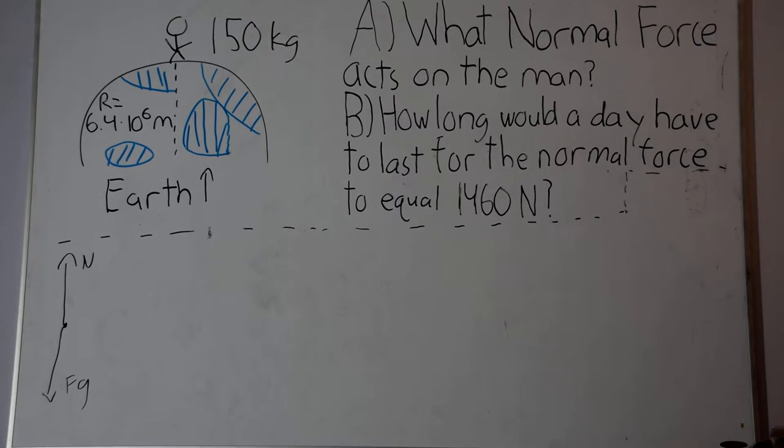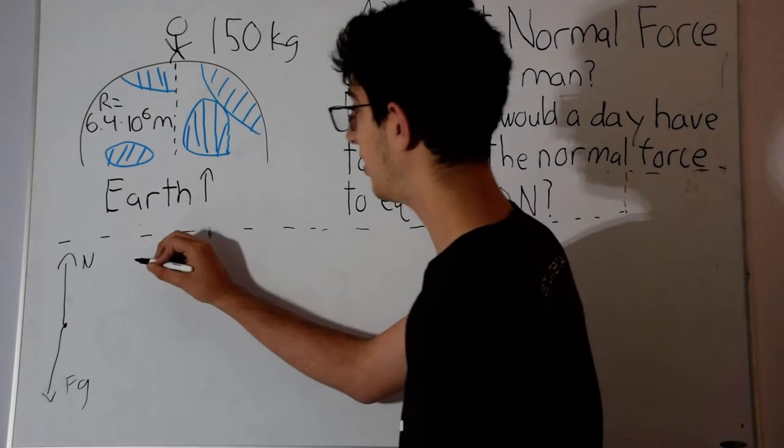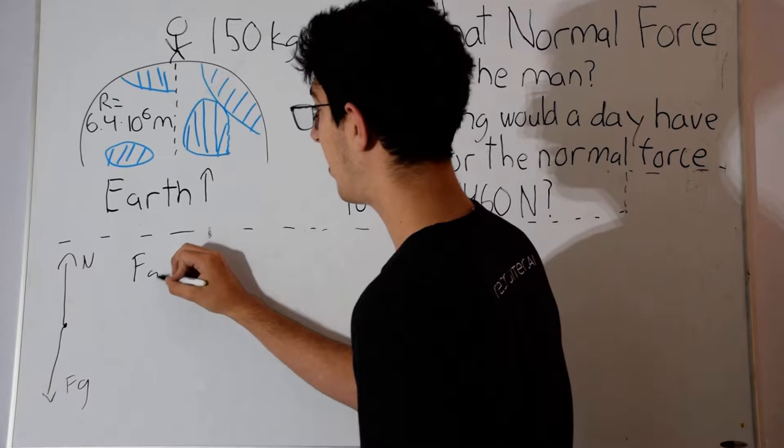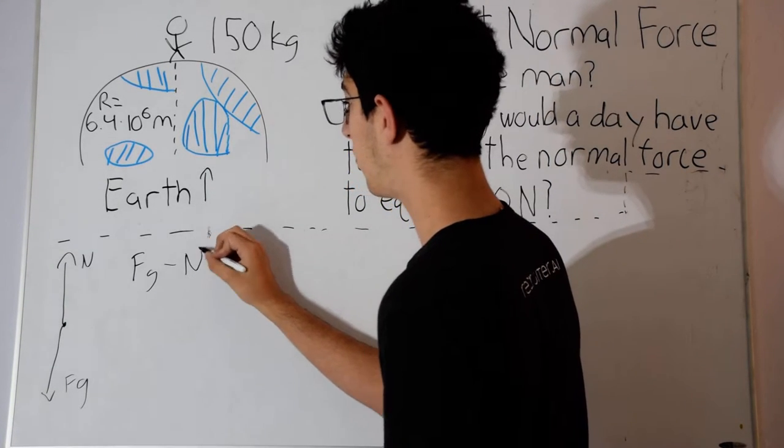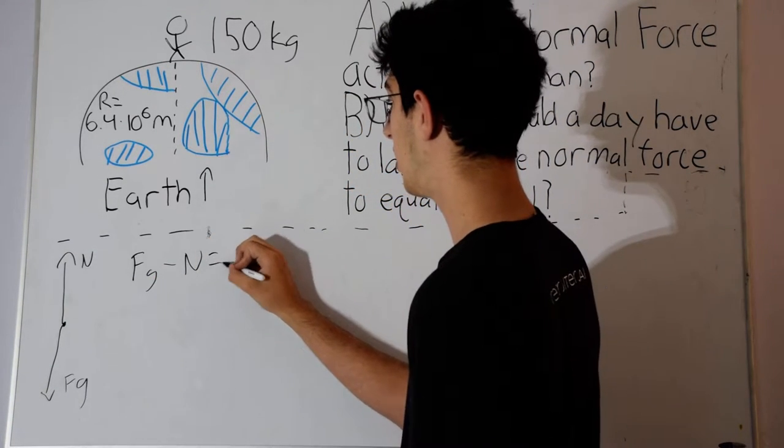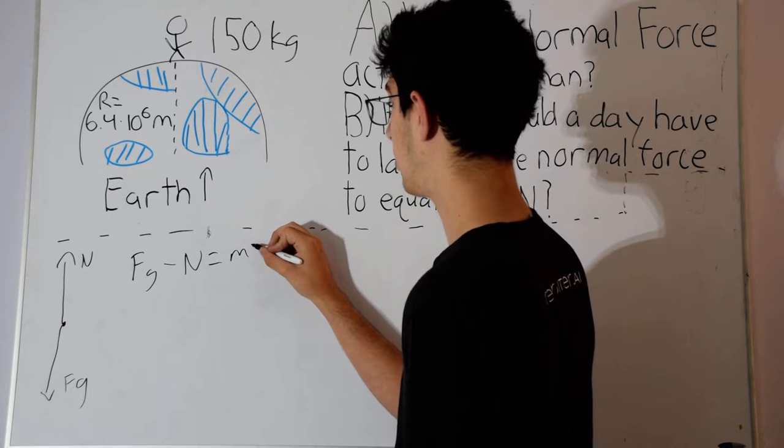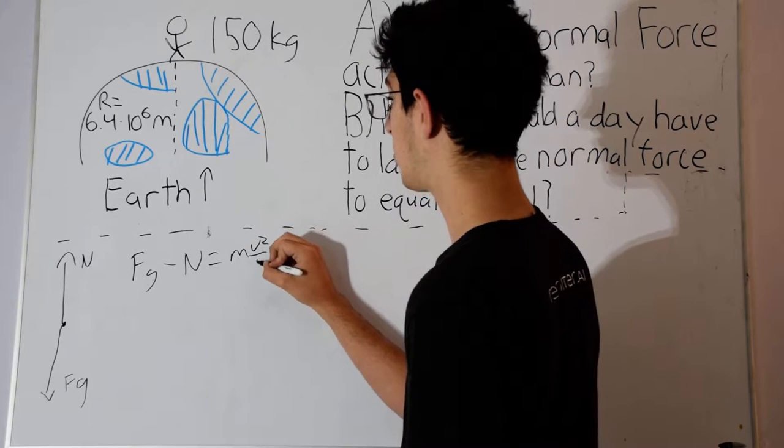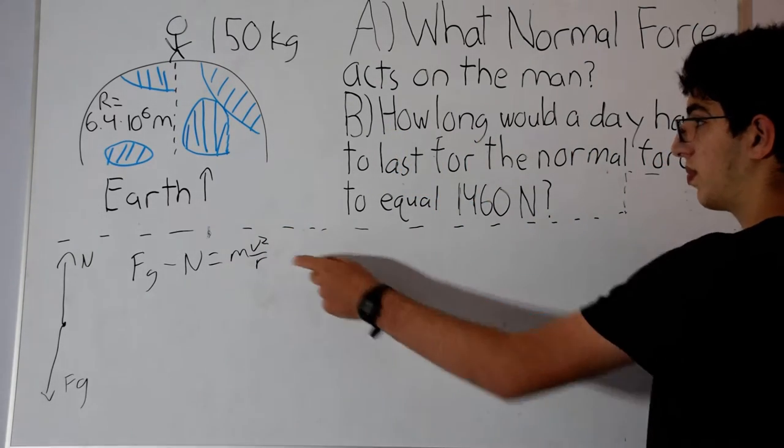We can use this to write our equation: the force of gravity minus the normal force (bigger minus smaller) is equal to ma, which in our case is mv squared over r, which is centripetal acceleration.